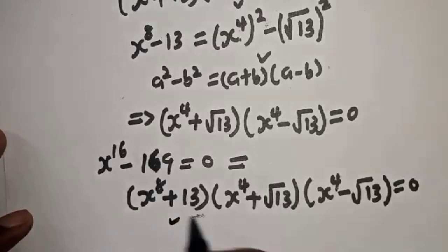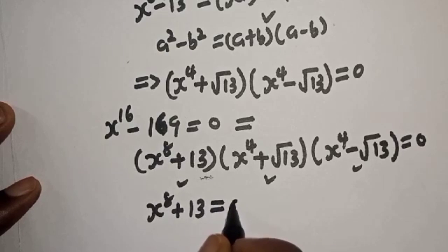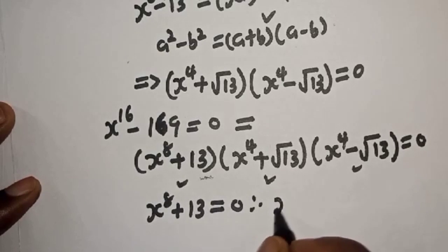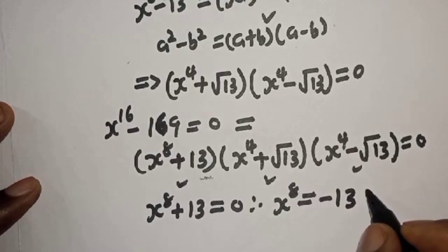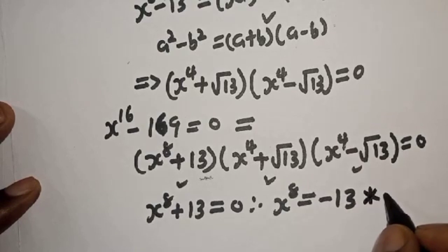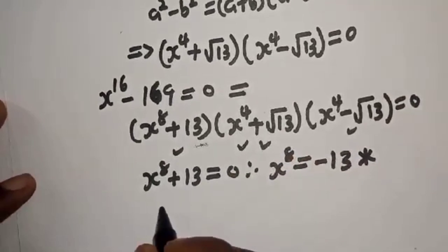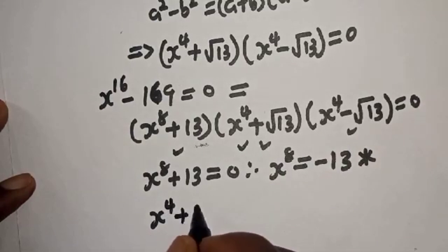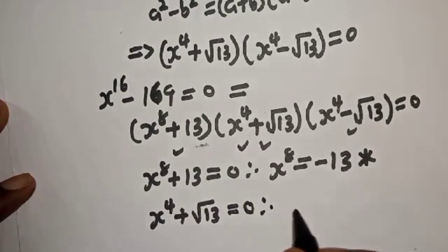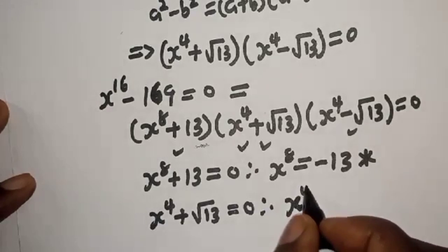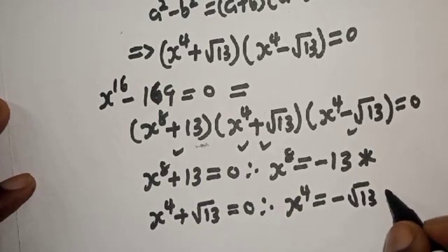Now there are three cases here. The first case is s raised to power 8 plus 13 equals 0, therefore s raised to power 8 equals minus 13. The second case is s raised to power 4 plus square root of 13 equals 0, therefore s raised to power 4 equals minus square root of 13. Both of these are less than 0 and are not real solutions.